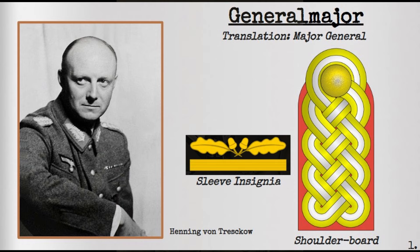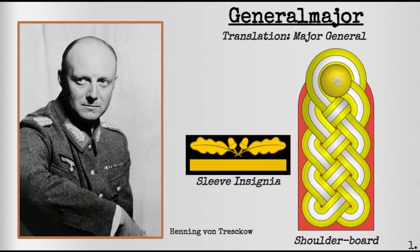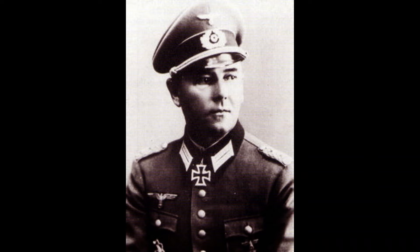The Generalmajor, or the Major General, was the lowest rank that a general officer could hold within the German army. Its capacity for field commanding would contain, but not be limited to, either a division or a brigade command. This would approximately command between 5,000 and 20,000 men. Its insignia held a blank braided gold epaulette. Notable holders include Karl Arning and Hamper.